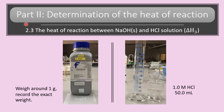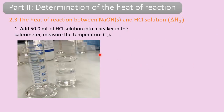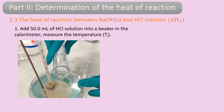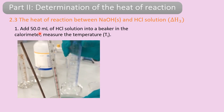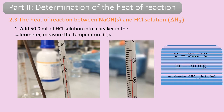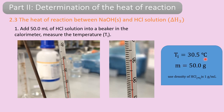Next, move on to part 2.3: the heat of reaction between sodium hydroxide in solid form and hydrochloric acid solution — this is delta H3. Weigh around 1 gram of sodium hydroxide and use 50 ml of hydrochloric acid. Add the hydrochloric acid solution first into the calorimeter and record the initial temperature. The initial temperature is 30.5 degrees Celsius.